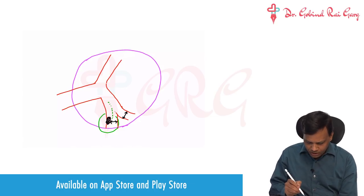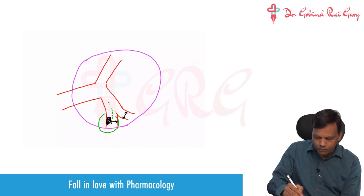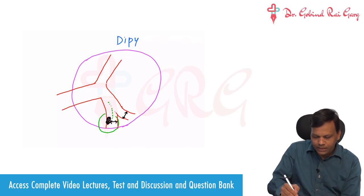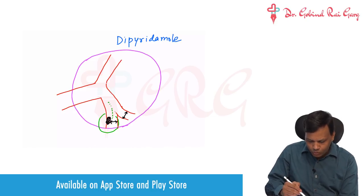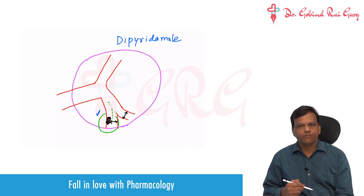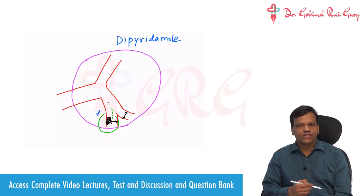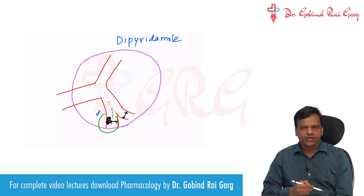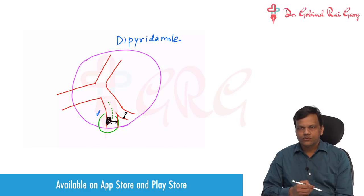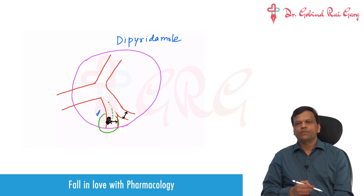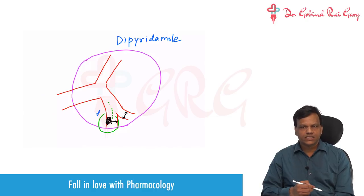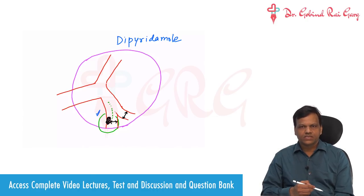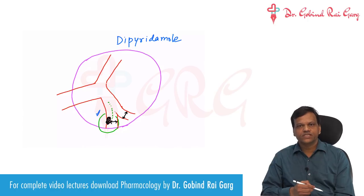Then we developed a drug called dipyridamole. This is a drug which dilates only small vessels. Since the problem is in small vessels, we developed this drug thinking it would be a very good drug for angina. But when we gave dipyridamole, instead of decreasing the attacks of angina, the person started having more attacks of angina.